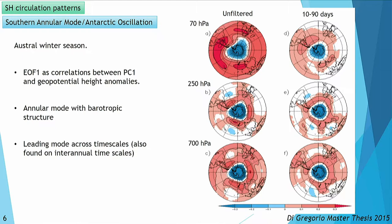The Southern Annular Mode is seen across seasons, across time scales, and in the vertical levels. It's mostly a barotropic structure. This is an example for Southern Hemisphere winter. If you perform the EOF analysis over the 700-hectopascal height — as we've seen — you can also do it in upper levels and the lower stratosphere, and you still get this annular mode signal with some differences in intensity. Not only when you do it on unfiltered data, but also in the intraseasonal band and also in larger interannual time scales.